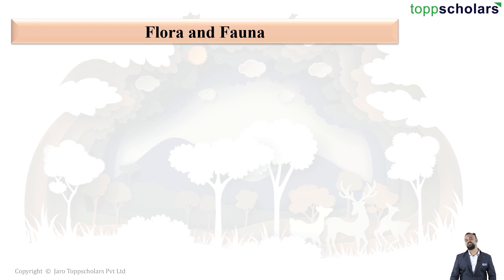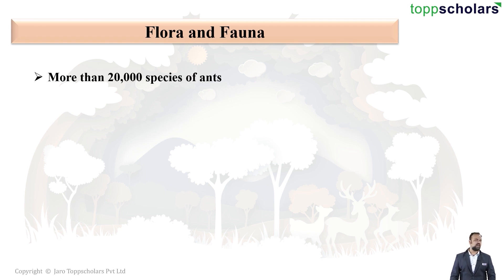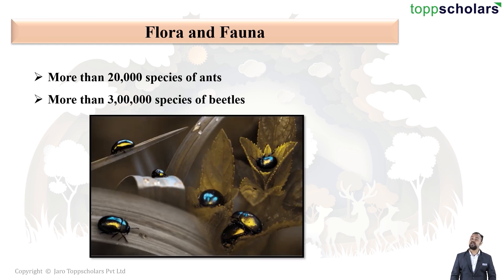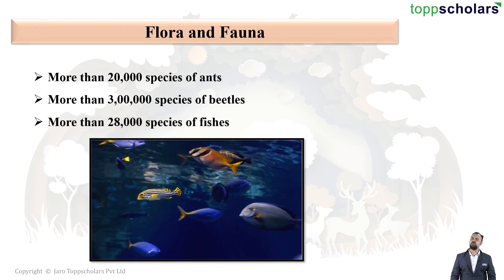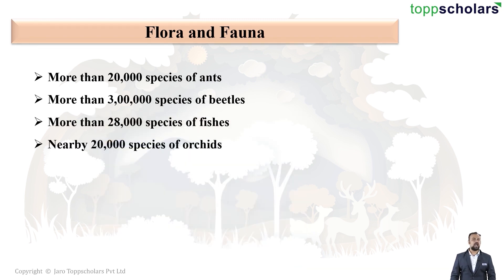For example, let us talk about flora and fauna. Flora means the various types of plants, whereas fauna refers to animals. There are more than 20,000 species of ants on our planet, and many more are yet to be discovered. There are more than 30,000 species of beetles and 28,000 species of fishes.